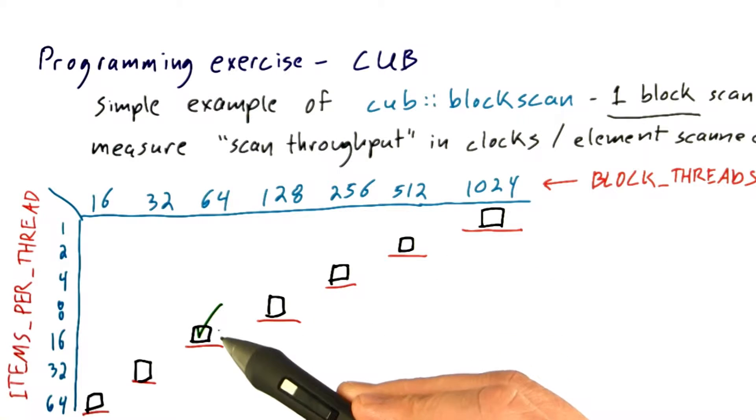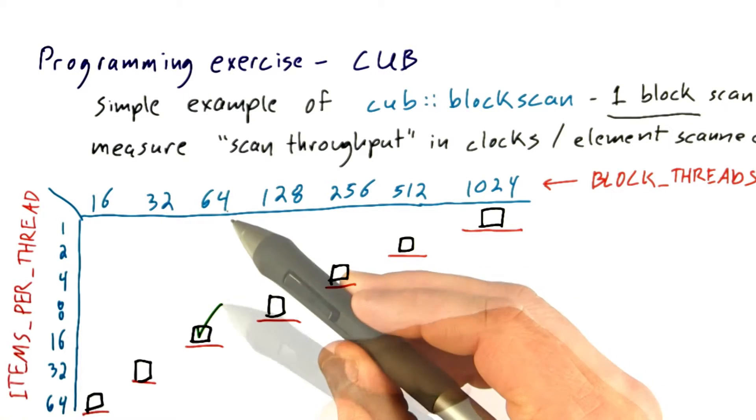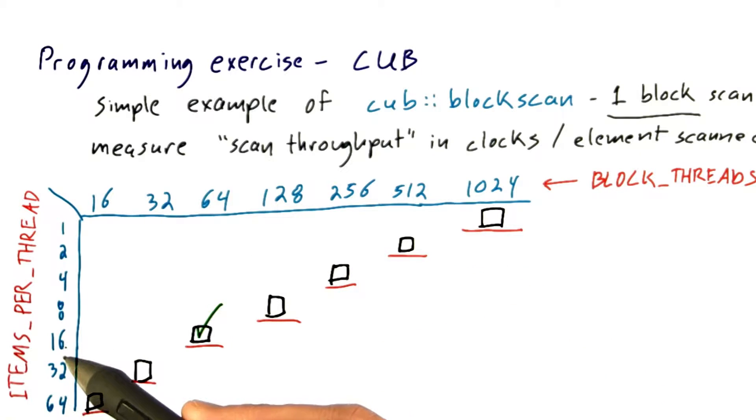So when I run all of these, this one is slightly the fastest of all of these on the diagonal. 64 threads per block operating on 16 items each.